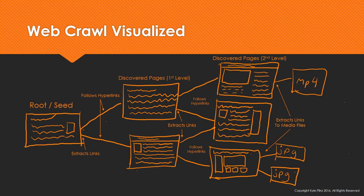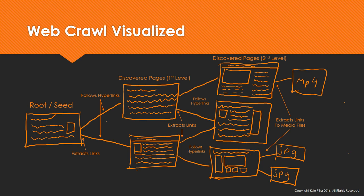Now, depending on the webcrawler, it might also extract media files. In this case, we can see on the second level page there it found a page that had a video file on it, and at the bottom it looks like it found a page that had some JPEGs. Depending on the crawler, it might extract those and do something with that data — it really all depends on what the specific webcrawler is.